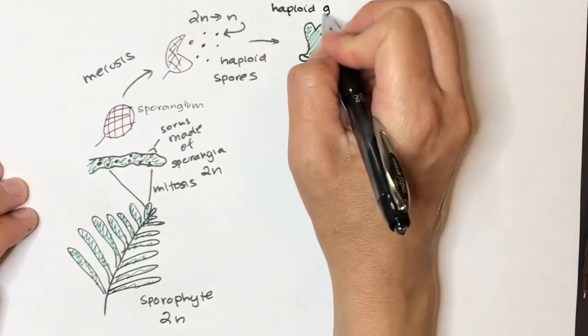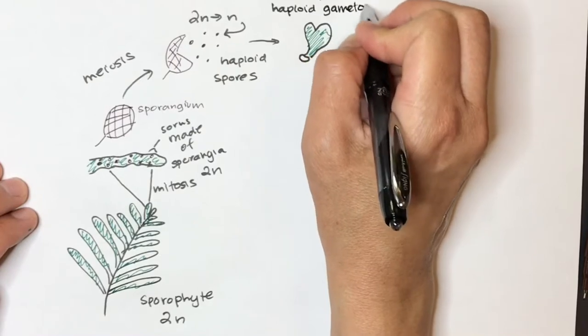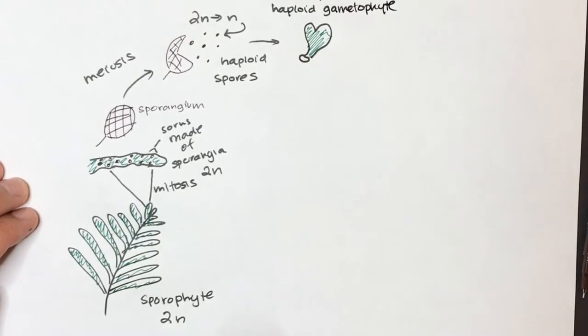This is our haploid gametophyte. So it's just coming about from mitosis of a spore.